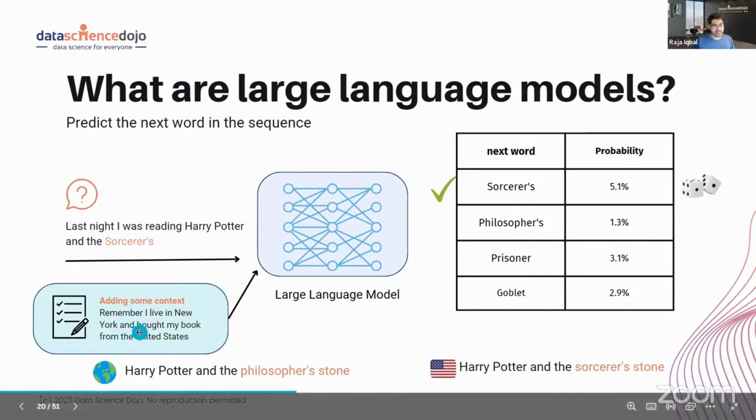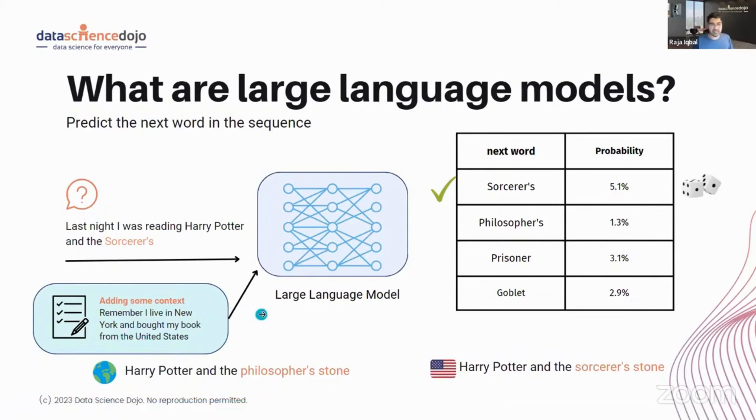I'm also adding some context. Remember, I live in New York and I bought my book from the United States. And suddenly, think about this - I'm almost tilting the probability. I'm actually shifting the probability in favor of a different next word. That's really what is happening.